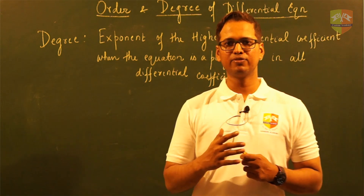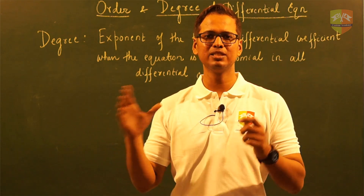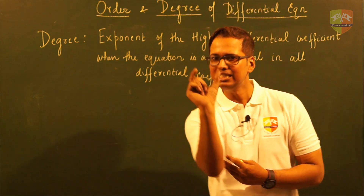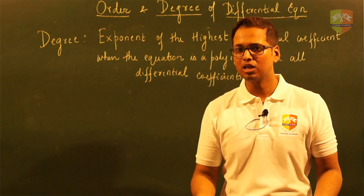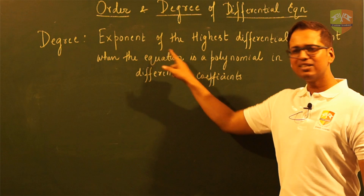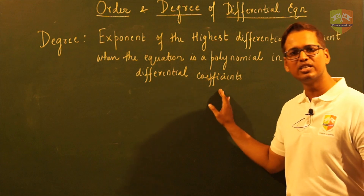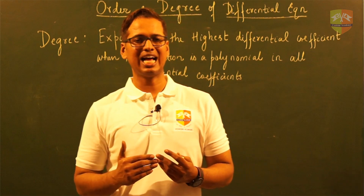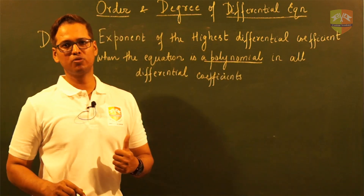Once you have identified the highest differential coefficient, which decides the order of the differential equation, the power of that term — the exponent of that term — when that differential equation has been expressed in the form of a polynomial in all the differential coefficients, that is the degree. Now what do I mean when I say 'expressed as a polynomial in all the differential coefficients'? Let us go back to class 10th. What do we understand from a polynomial?